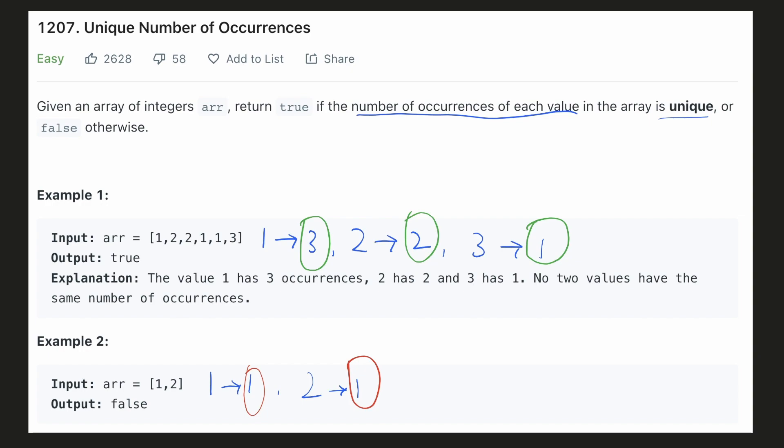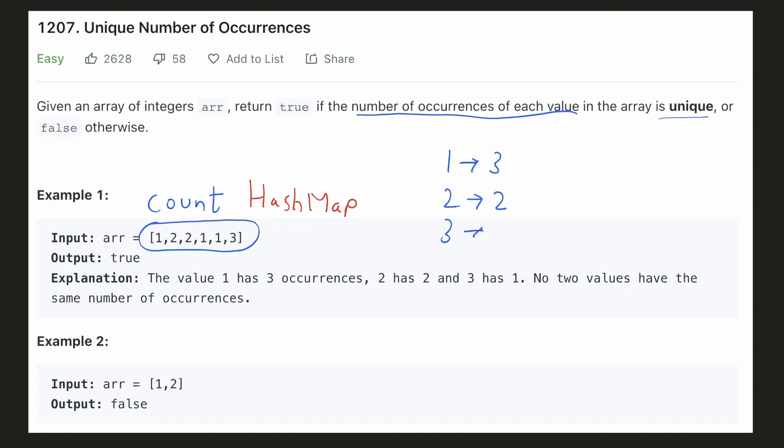To solve this, the obvious thing that we will need is to count the frequency of each element and this can be stored in a hash map. And once we have the frequency values, we'll have to check if all these values are unique or not.